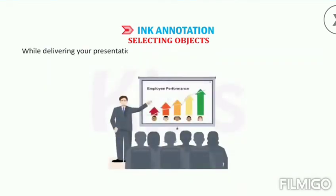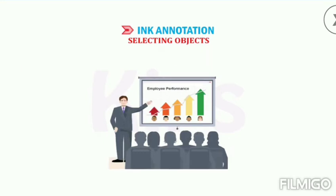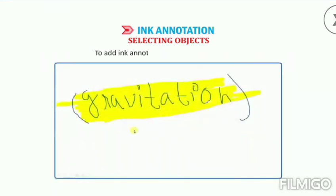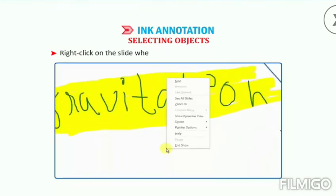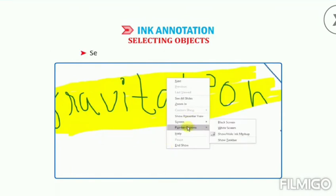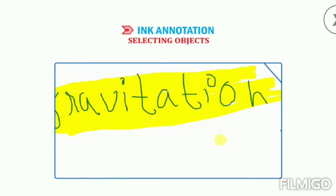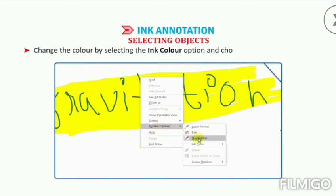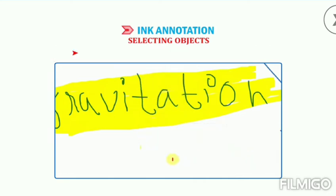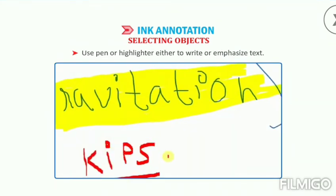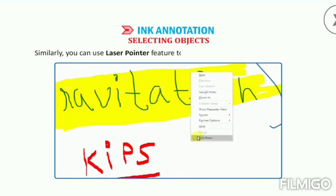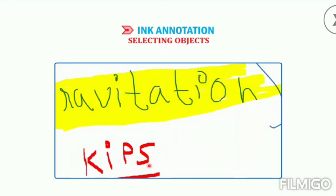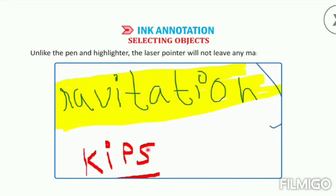While delivering your presentation to the audience, you may need to emphasize a word or phrase or make some explanatory notes on the slides. Slideshow view provides you with various options to annotate your presentation. To add ink annotations during the slideshow, right click on the slide where you want the annotation pen to appear. Select the Pointer Options from the context menu. Now select the Pen or Highlighter option as desired. Change the color by selecting the Ink Color option and choosing the desired color from the palette. Use pen or highlighter to write or emphasize text. You can also use the Laser Pointer feature to highlight key points on the slide. Unlike the pen and highlighter, the laser pointer will not leave any marks on the slide.